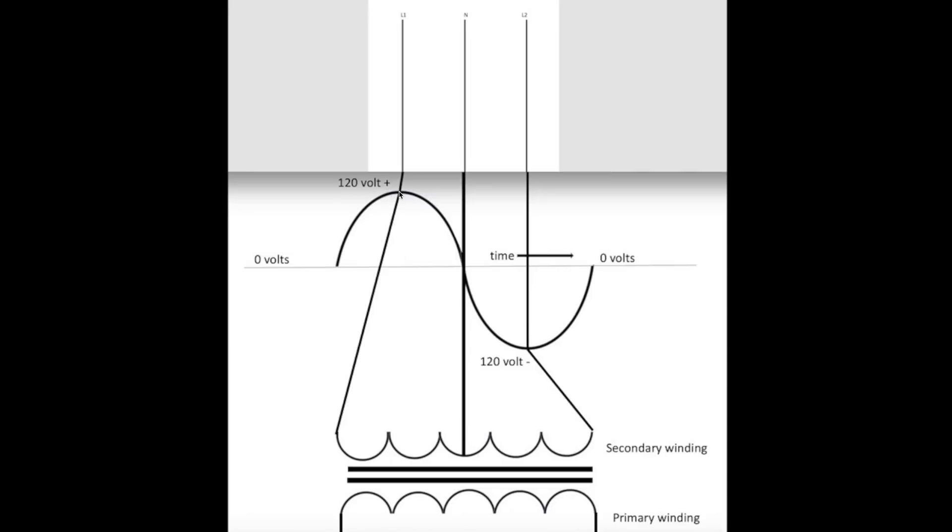But if I looked at a snapshot in time of this, when this is at 120 volts positive, this is going to be zero. And then it's going to go to 120 volts negative, but this is always zero. So this is usually considered zero voltage on the neutral.